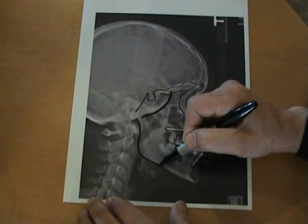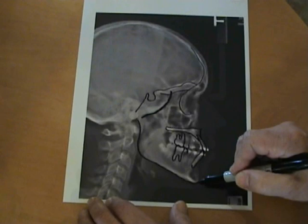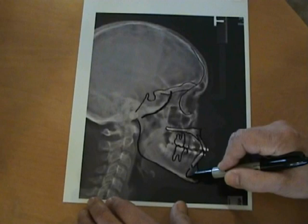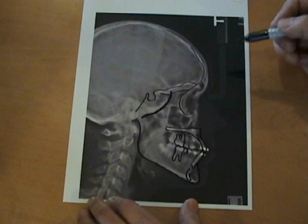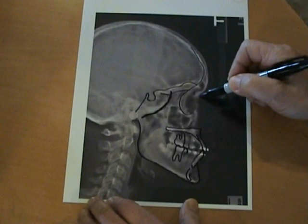Posterior border of the ramus. Inferior border of the ramus. Menton is right here. Pogonion is right here. Nasion. It's right here.